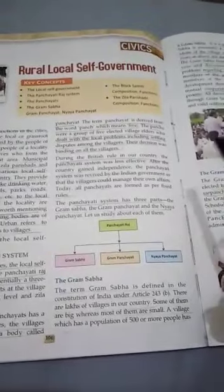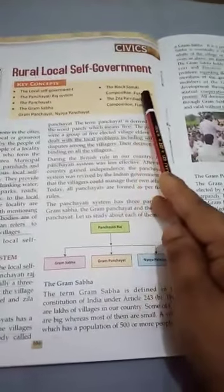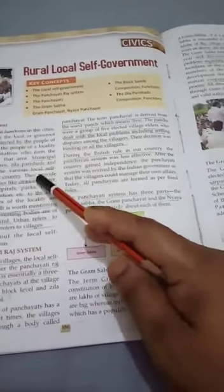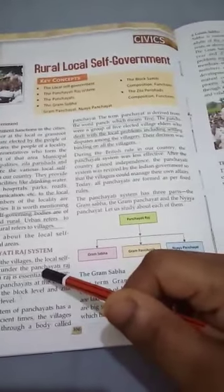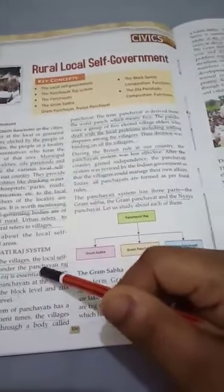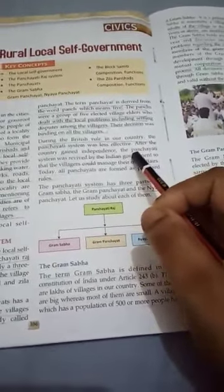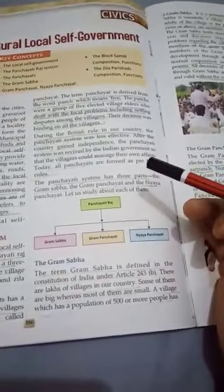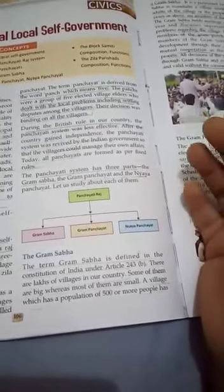Welcome back students. This is the second video of the chapter Rural Local Self-Government in civics. I had already talked about what is the local self-government and the Panchayati Raj system, which was very prominent in ancient times. During British rule it lost its significance, and after independence the Panchayati Raj system was again revived so that local affairs of the people could be solved without any delay.